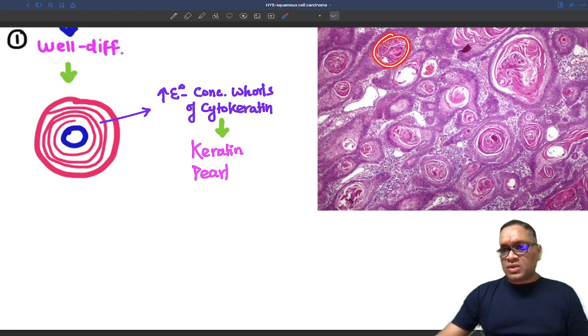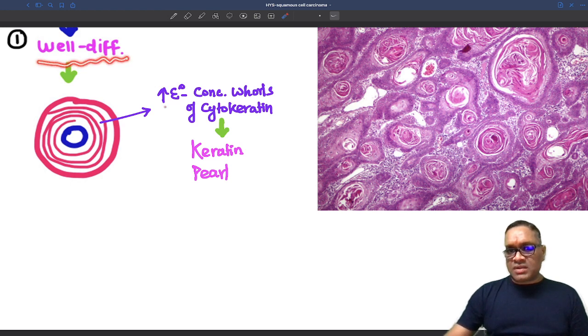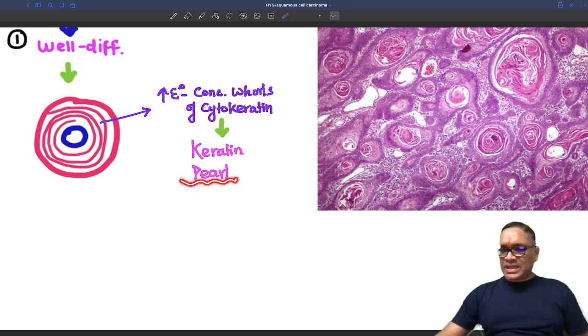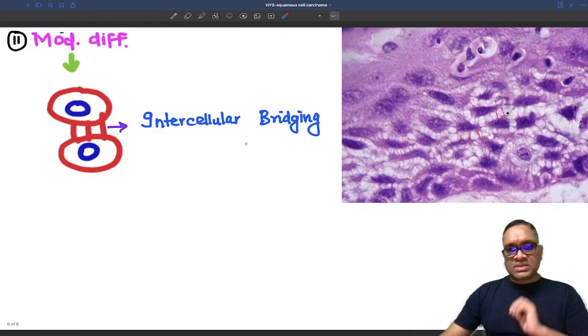So now you can see in the histopathology, you can notice there are concentric keratin pearls. So these are well differentiated because we are seeing eosinophilic concentric whorls of the cytokeratin which we are seeing in all these diagrams. So that is the keratin pearls and well differentiated Squamous Cell Carcinoma.